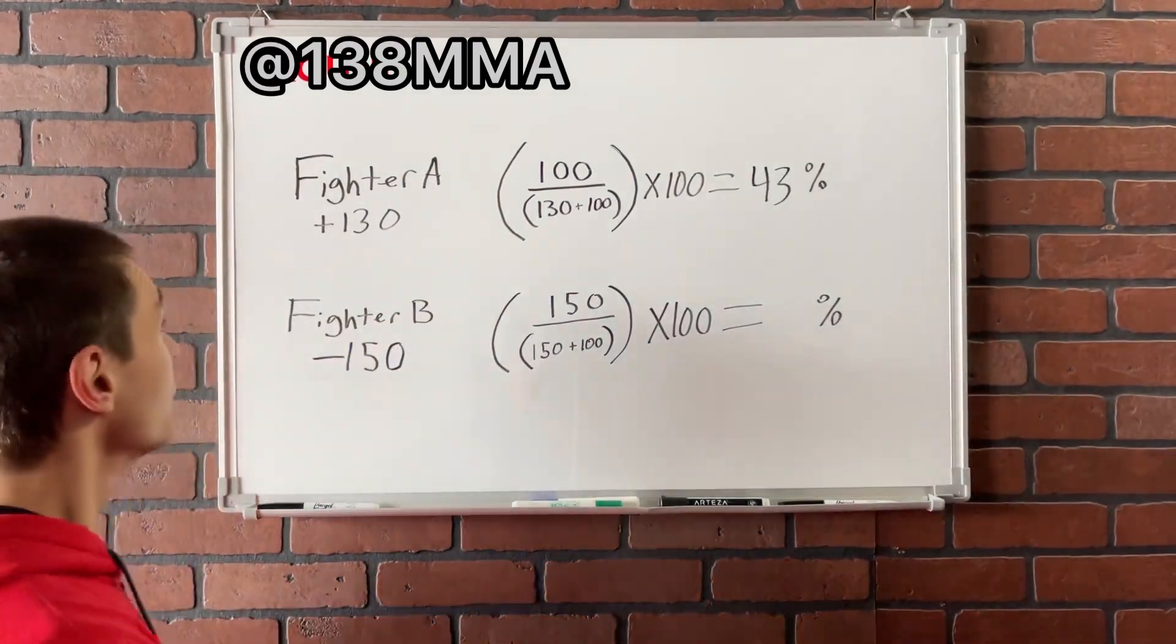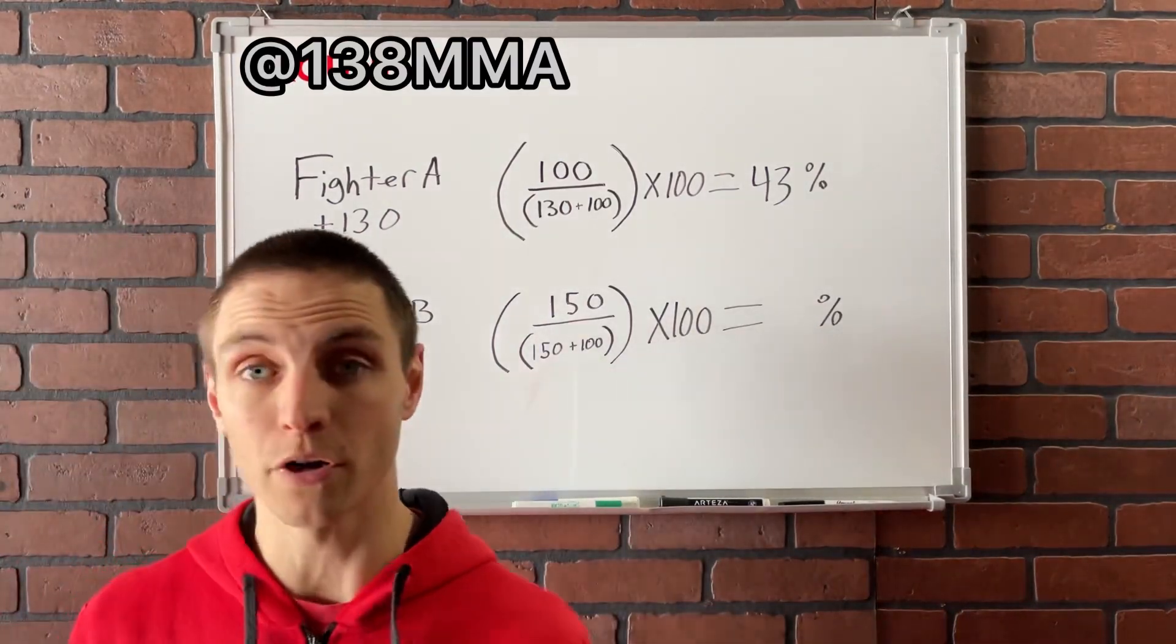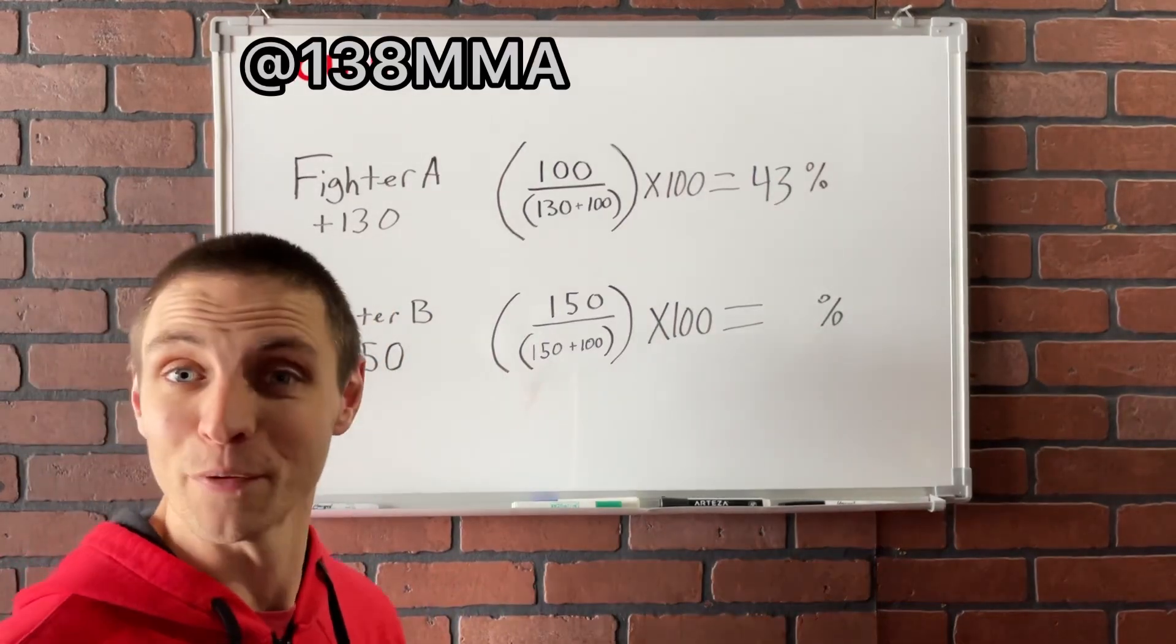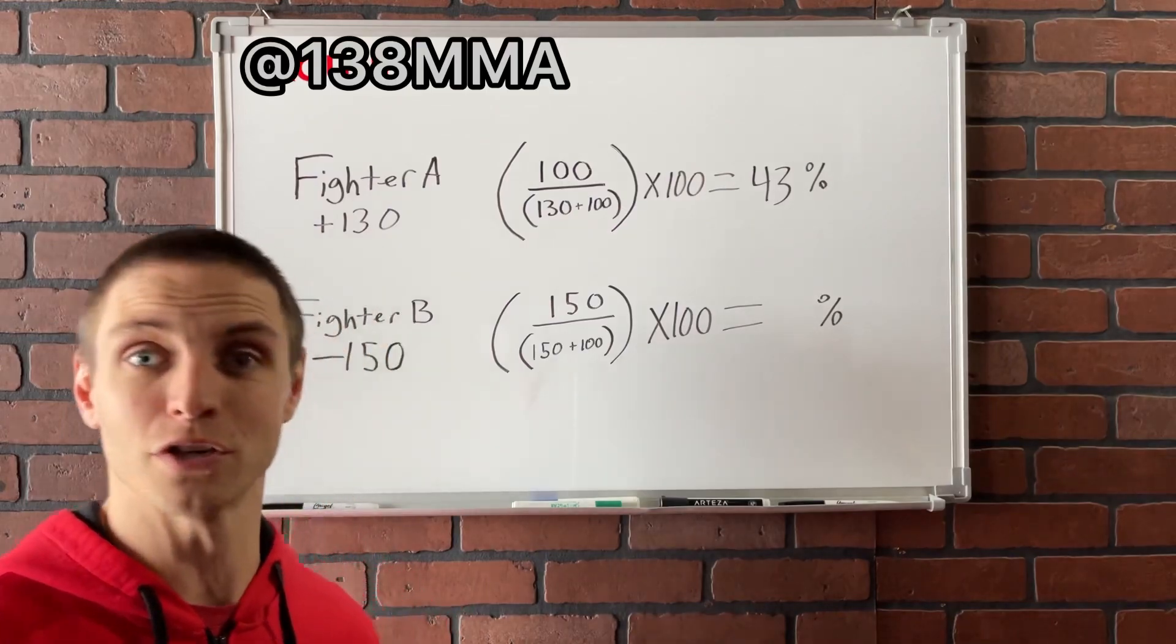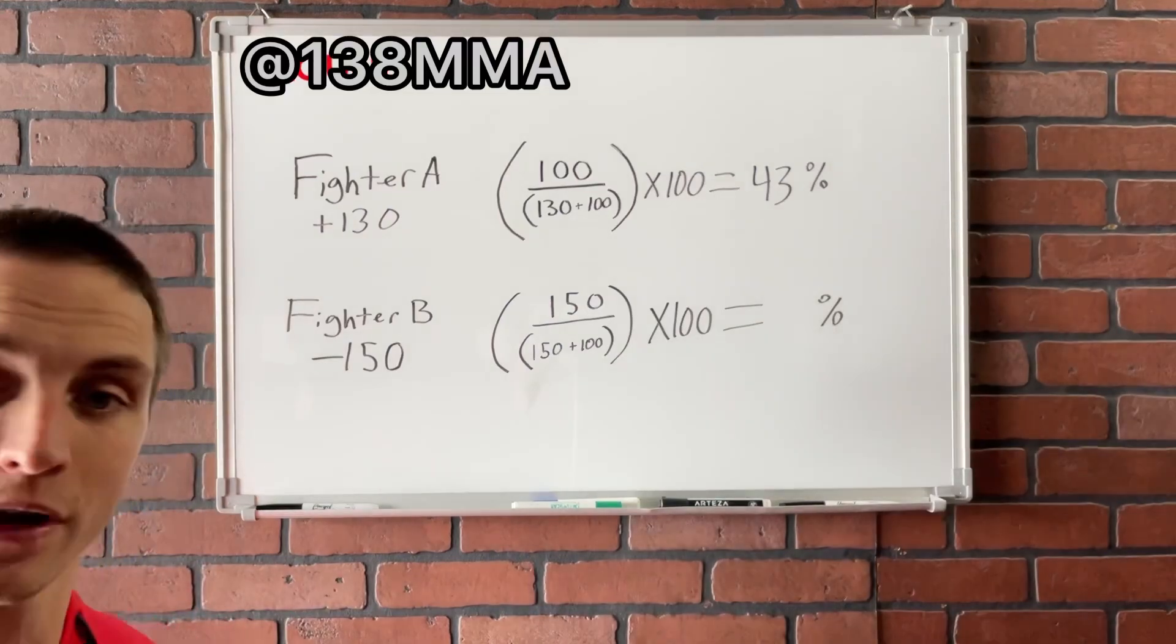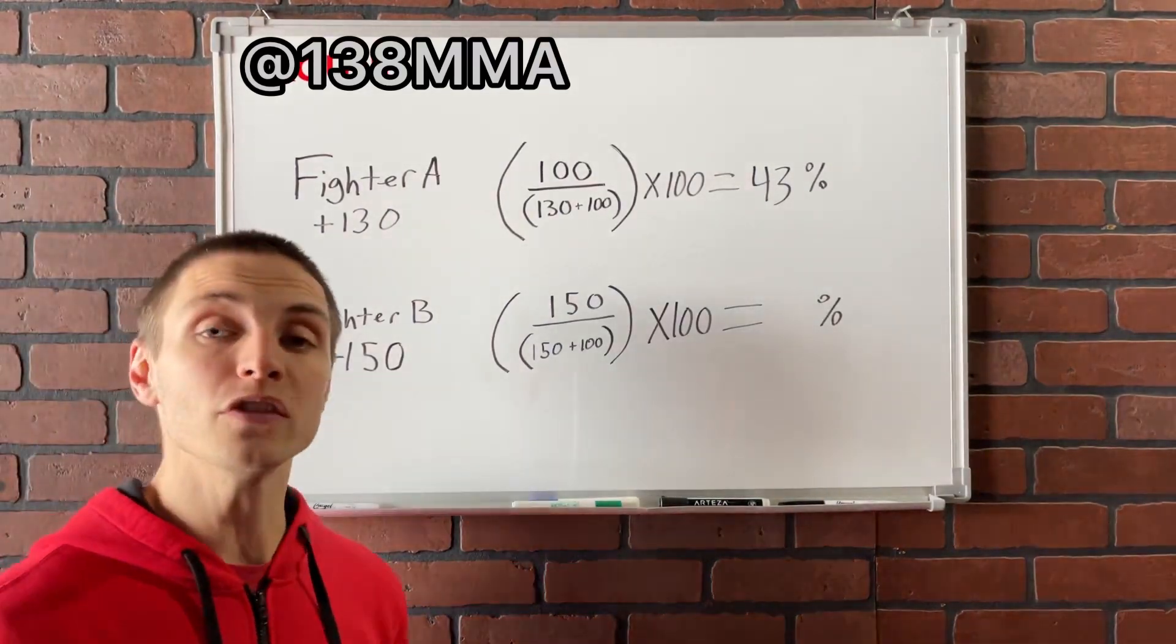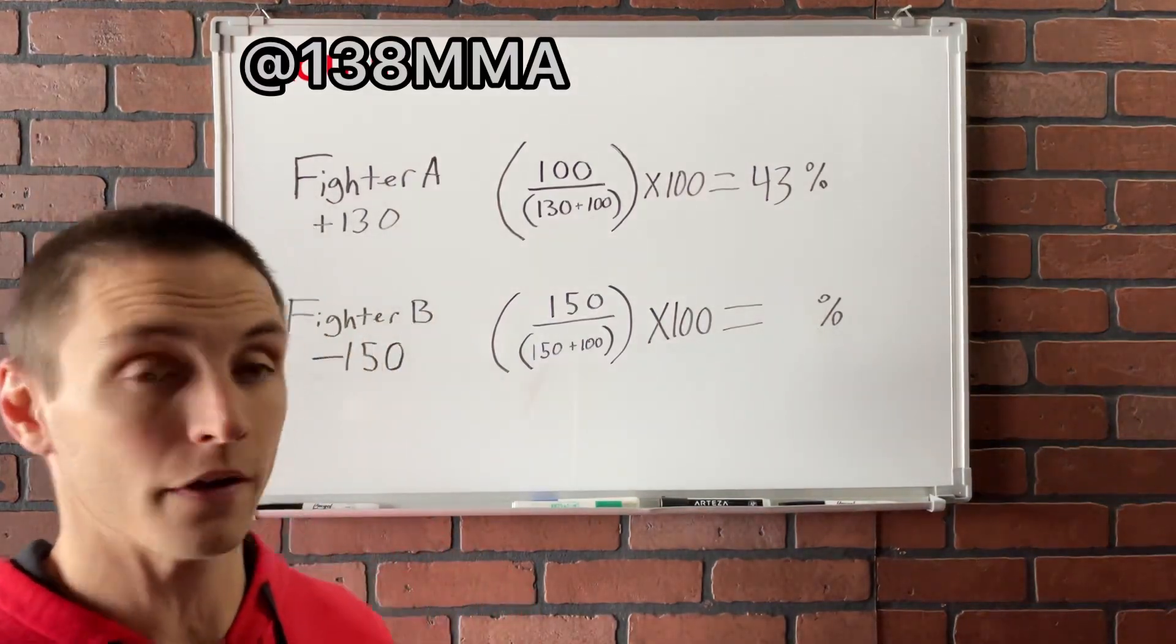Anyway, so to break down the implied probability here, we're going to have to do a little bit of math and we're going to use the PEMDAS system. If you remember that from grade school, parentheses, exponents, multiplication, division, addition, subtraction. If you remember that, let me know in the comments because that was a staple of my grade school years. But here we're going to use that to determine the percentages on these fights here.